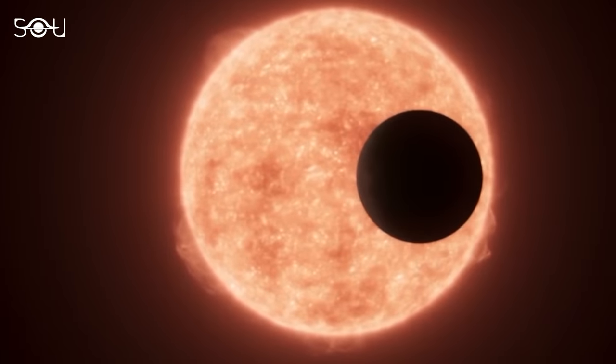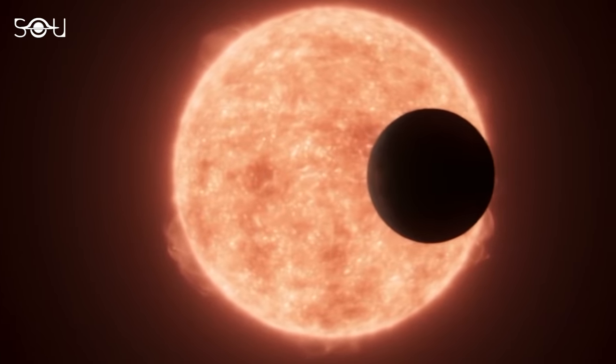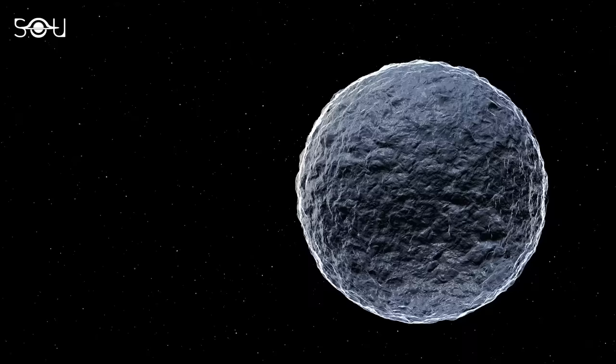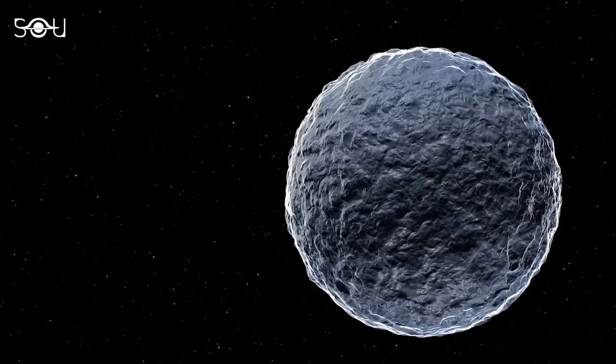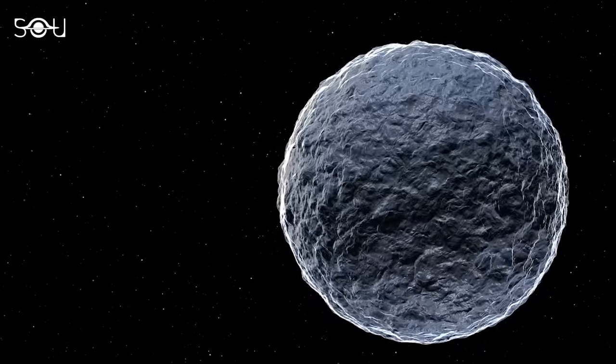That's puzzling because the orbital period of the planet implies that it lies too close to the star. This means that something intriguing is happening on the planet that is allowing it to harbor an ocean of water on its surface.